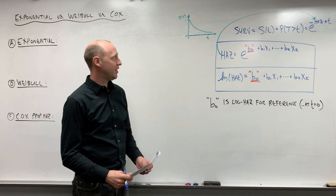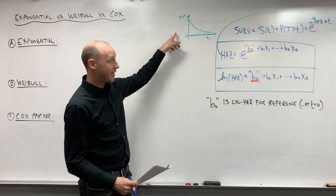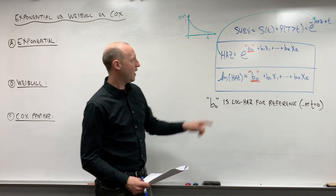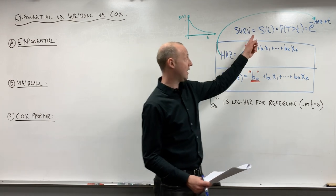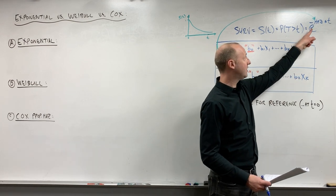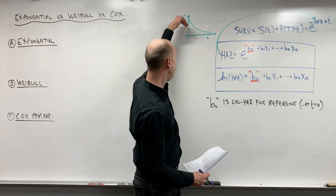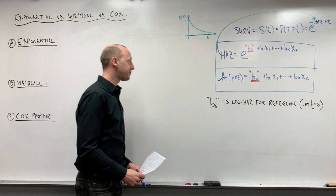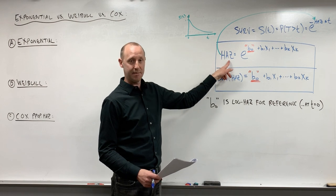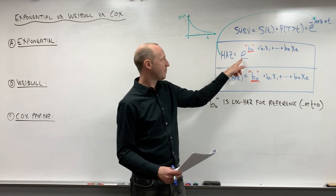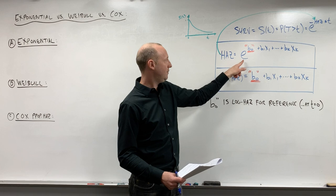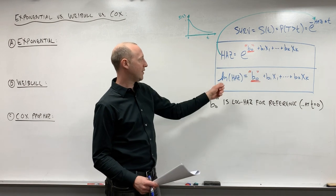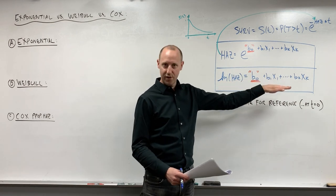Previously we laid a bit of foundation and said that we want to estimate a survival function, a nice smooth curve, and we learned how we can estimate the survival function using e to the negative hazard times t. This creates a negative exponential shape where the hazard is the rate at which the curve is decreasing. We built up the idea that we can estimate the hazard using a regression model, here using an exponential function of x variables, or we can think of it as modeling the log hazard as a linear function of x variables.